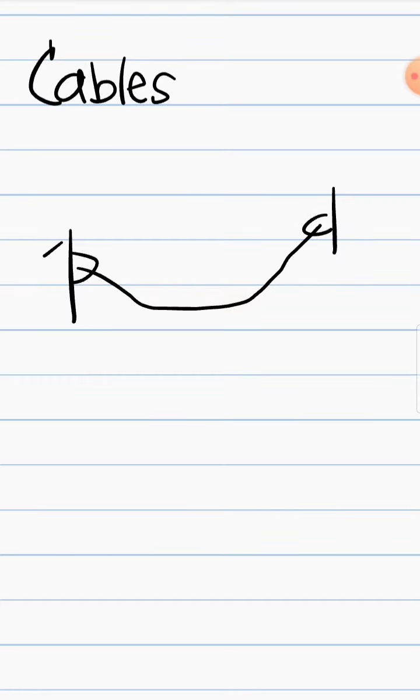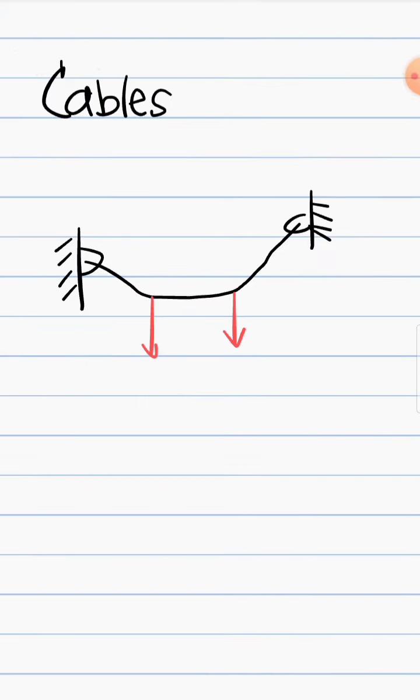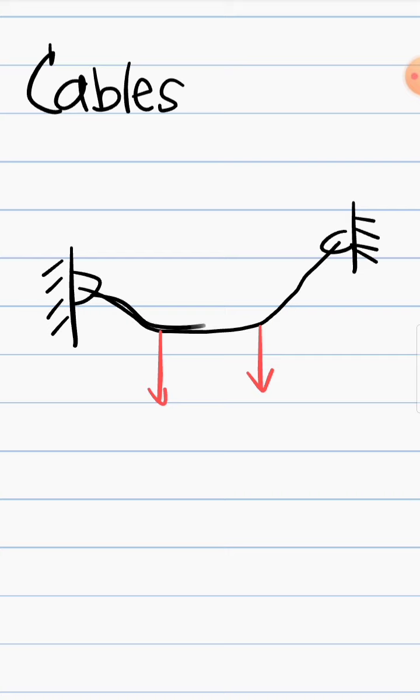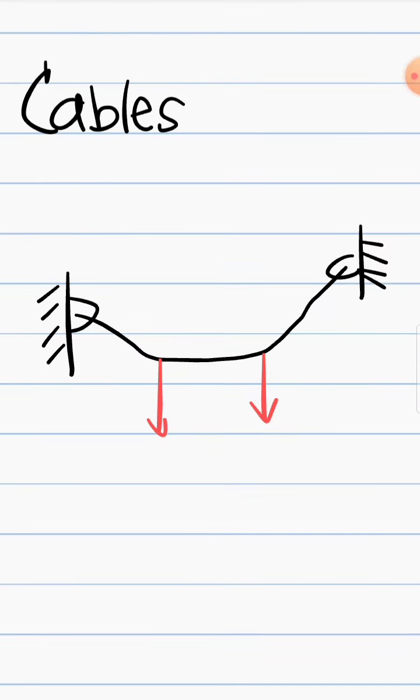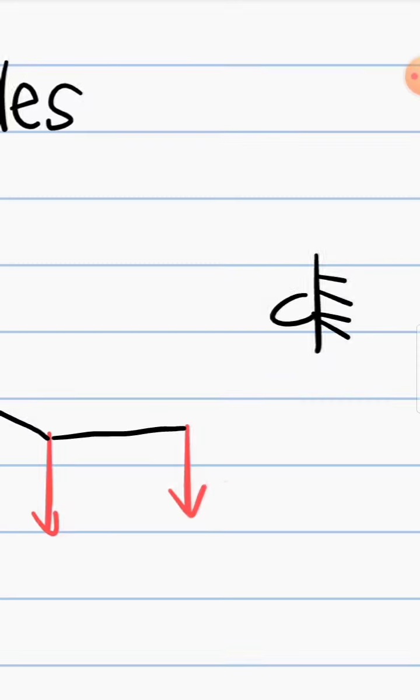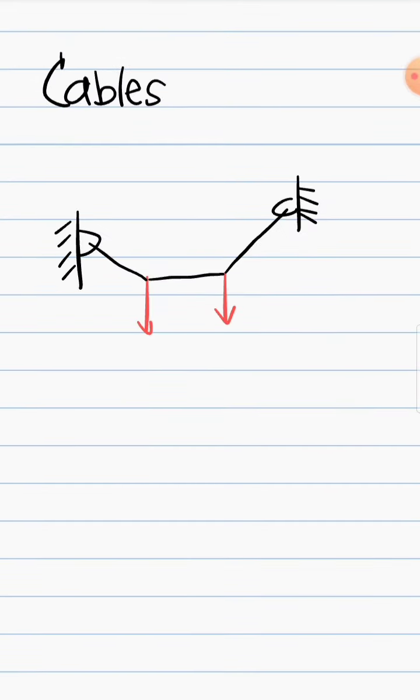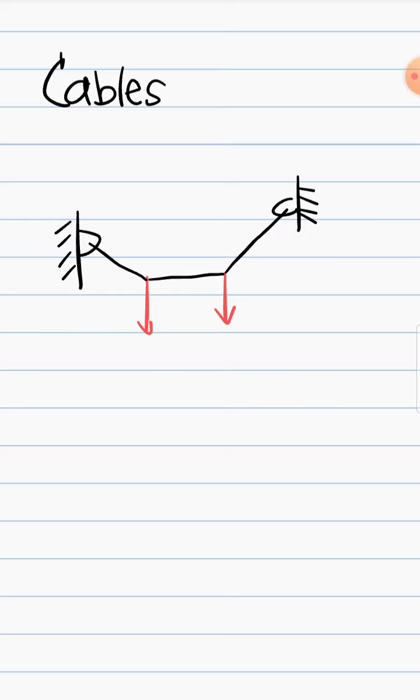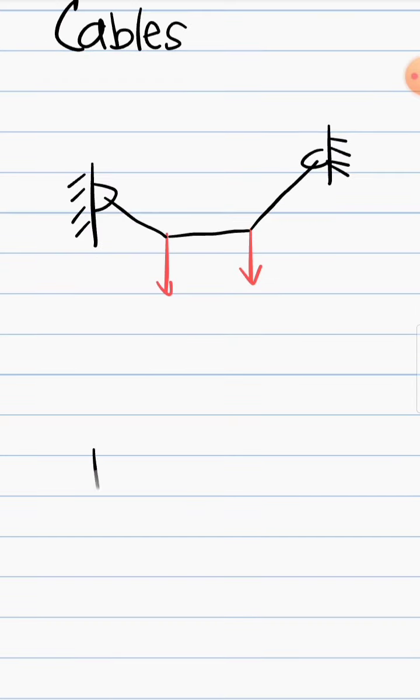This is based on the external loads that these cables are carrying and subjected to. The first one is if we have cables or a cable that is supporting a concentrated load. When we say concentrated load, these are loads that act only on a single point. In our example, this cable right here is supporting these two loads at this point and at this point. When that happens in this first case, the cable will no longer be the shape we've seen a while ago, but rather it became just like this. The loads, these concentrated loads, cause the cable to have small segments that carry forces.